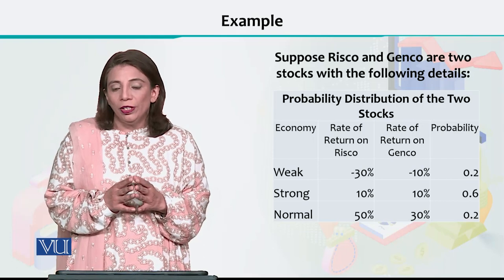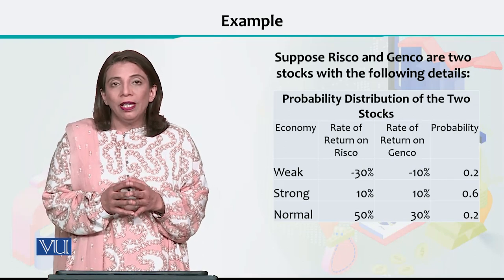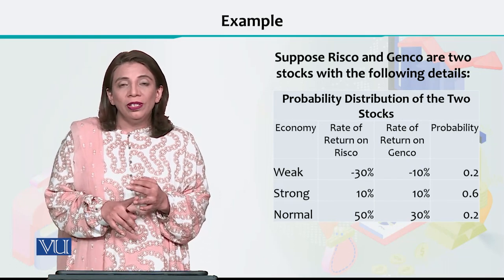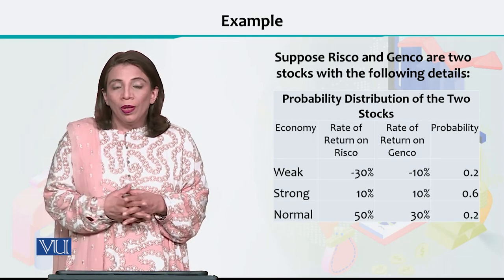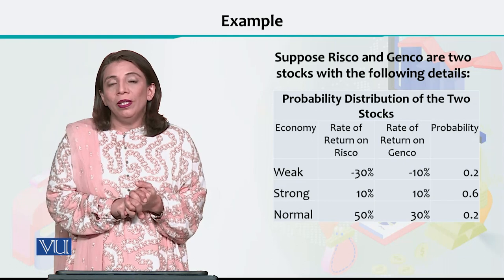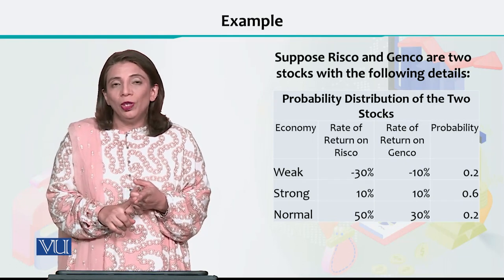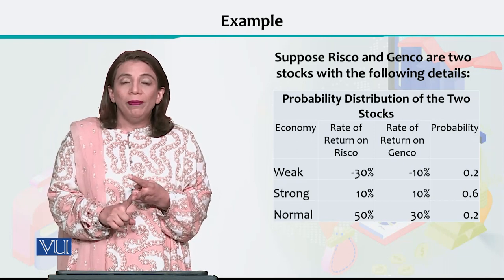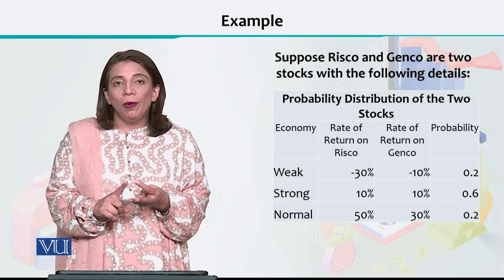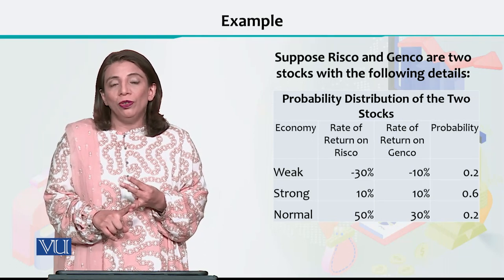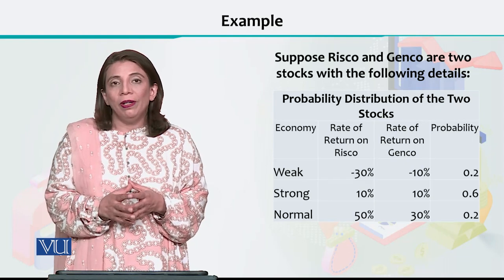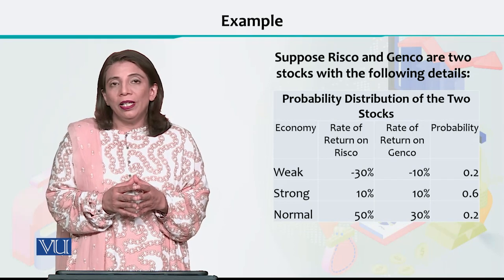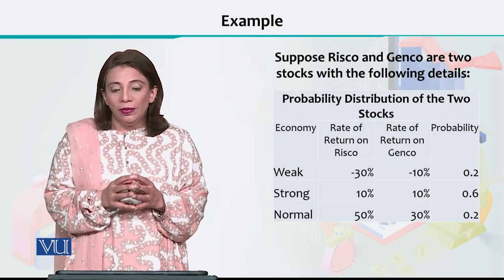We will calculate the standard deviation of the return of RISCO and the return of GENCO. For that we use a formula which needs three things: first, the expected returns; second, the mean; and third, the probabilities. I have already told you how to calculate the mean, so we will use these three things and plug them into the formula to calculate the standard deviation values.